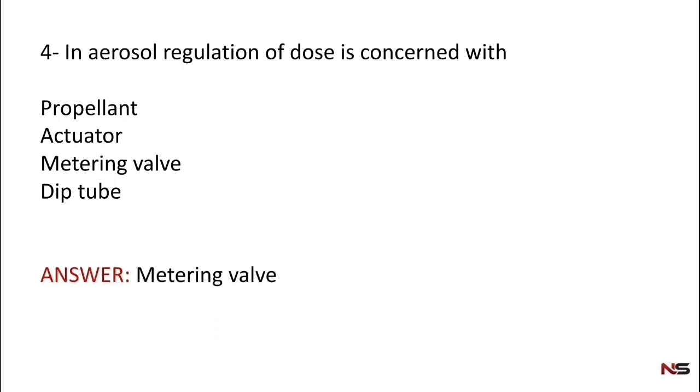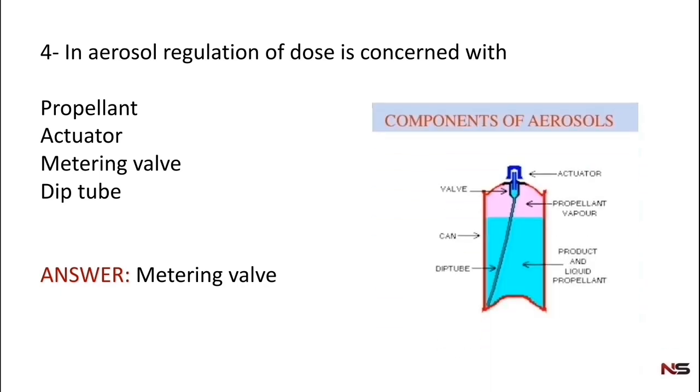The correct answer is metering valve. If you write the same answer you will get positive 4 marks. If it is wrong, negative 0.33. If it is blank, zero. The components of aerosol - you can see here in the right side the picture of aerosol. You can see actuator, propellant, product, dip tube. The dose regulation is concerned with metering valve.